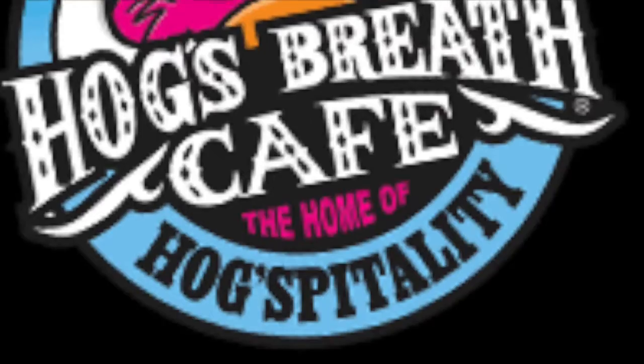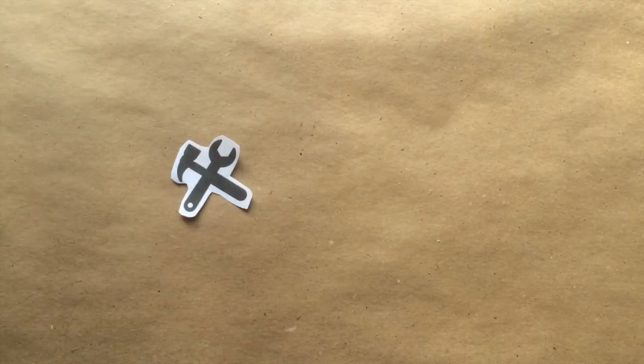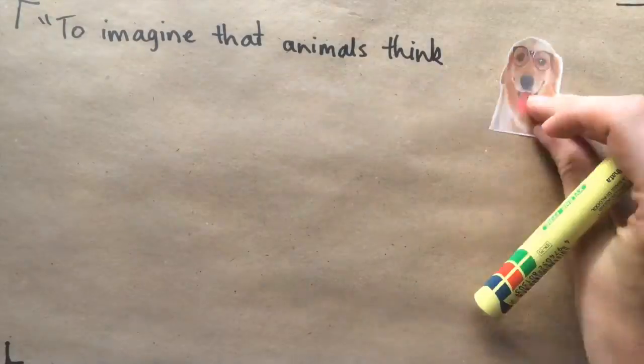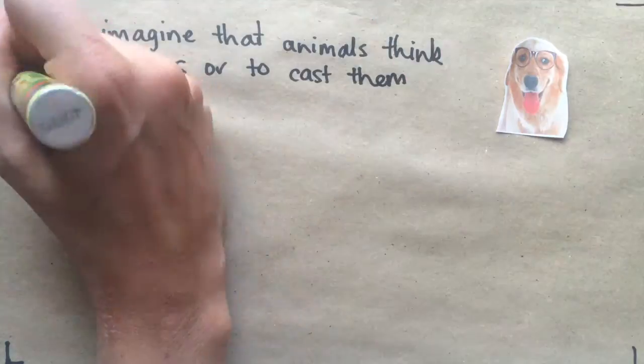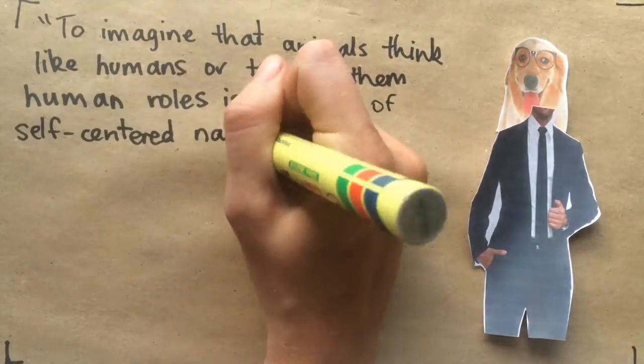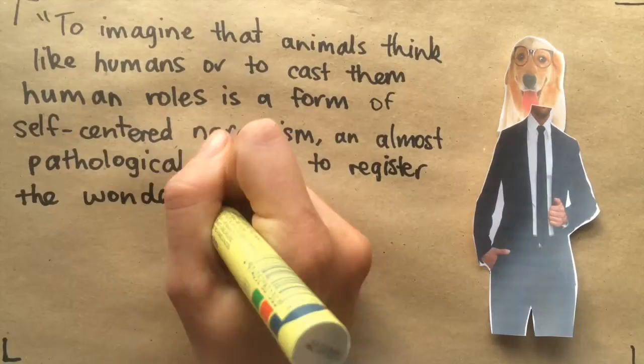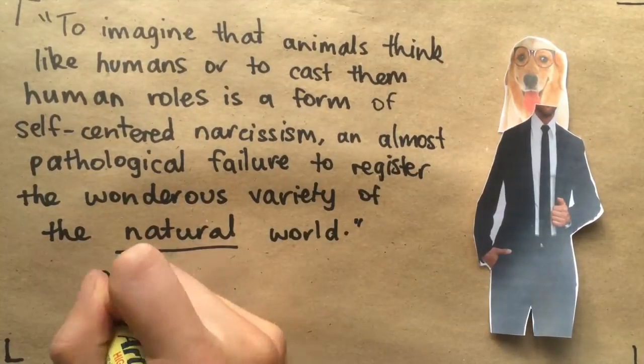We are removing them from their natural contexts and using them as tools for communication and economical gain. To imagine that animals think like humans or to cast animals in human roles is a form of self-centered narcissism and almost pathological failure to register the wondrous variety of the natural world.